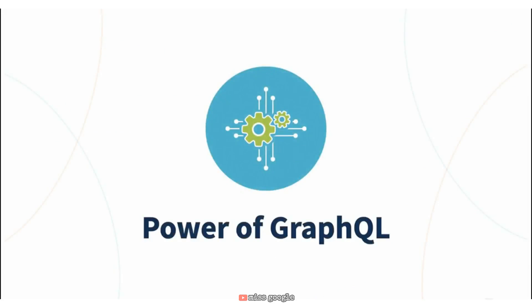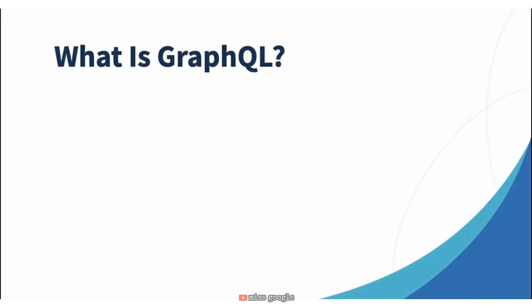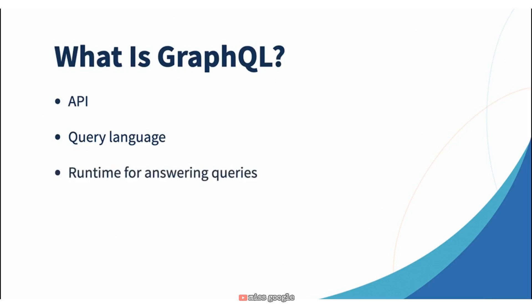GraphQL is considered by many to be the most logical way to build an API that is consumed by both JavaScript applications as well as mobile applications. First and foremost, GraphQL is an API — an application programming interface — designed to serve data when requested to other systems or other parts of the system itself. It is also a query language for that API, allowing you to structure queries to get data that matches what you asked for. Most importantly, it is a runtime for answering those queries.